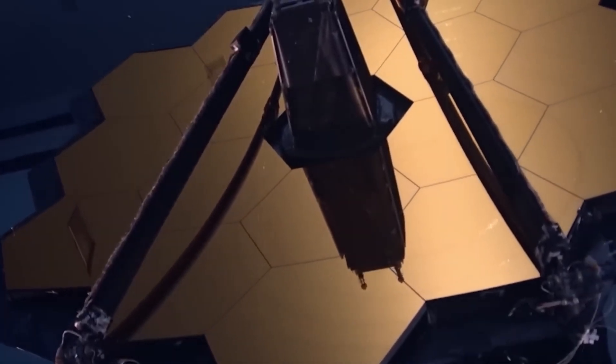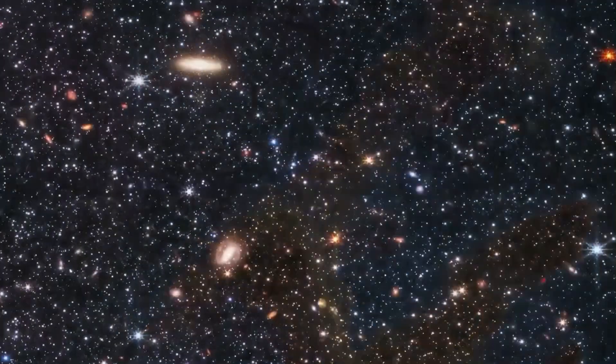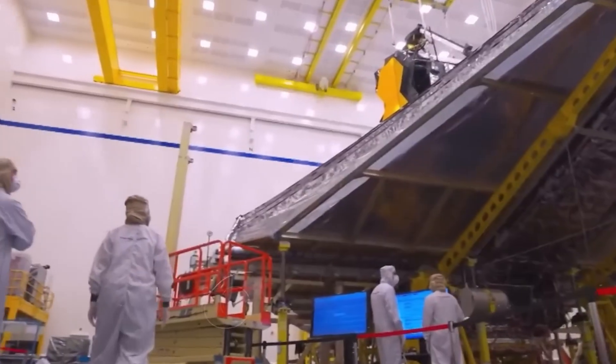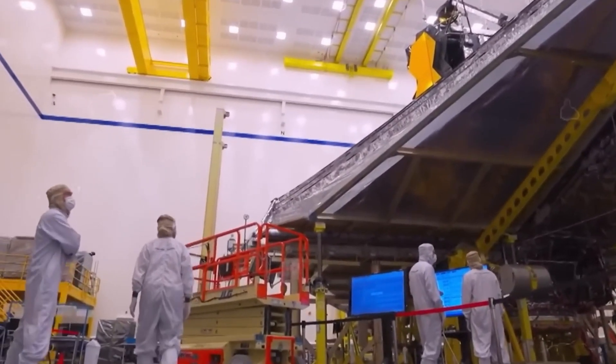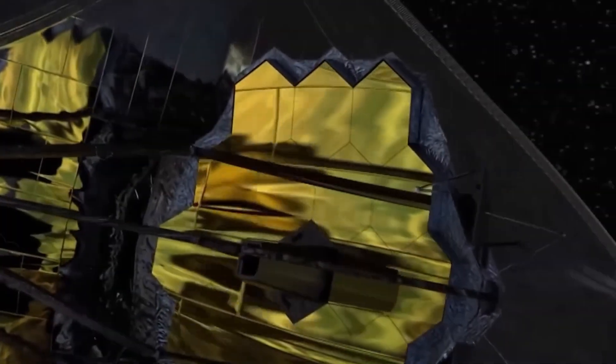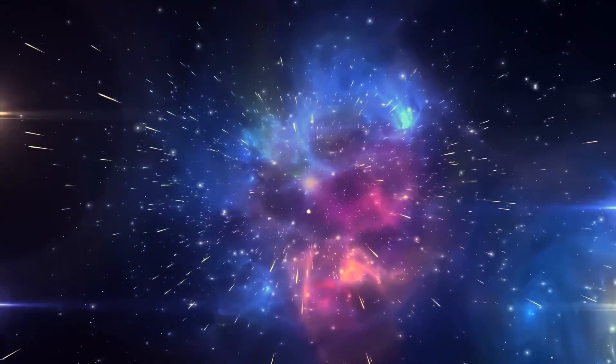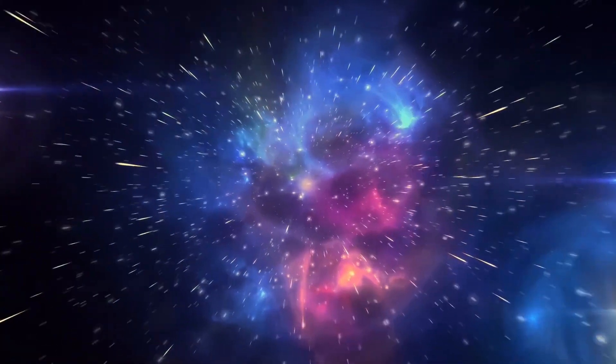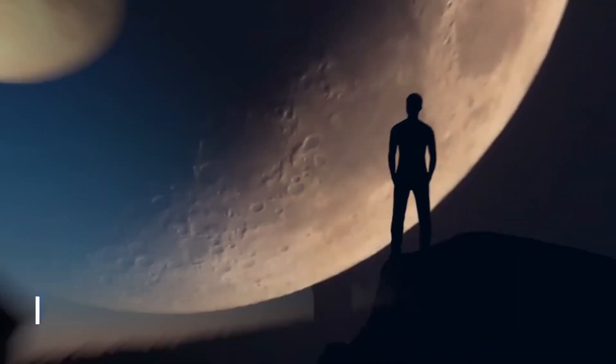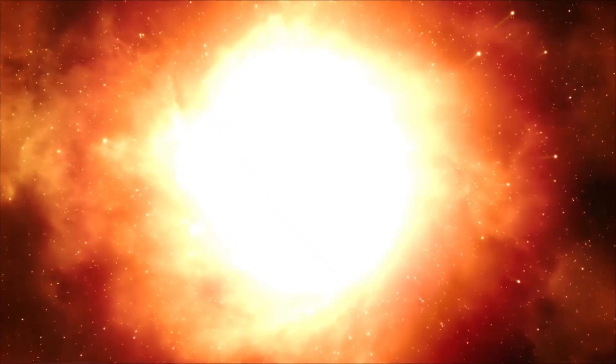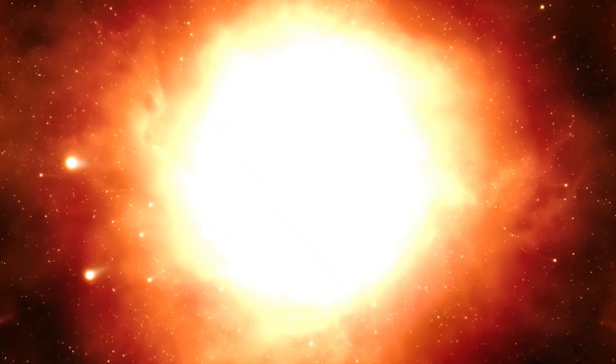Exoplanets and solar system exploration: The JWST's capabilities extend beyond distant galaxies. It spots exoplanets, revealing details about their atmospheres and even detecting compounds like carbon dioxide and water vapor. Closer to home, it studies planets in our solar system, providing crisp views of Jupiter's auroras and Neptune's rings.